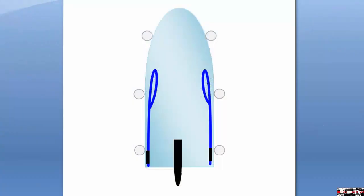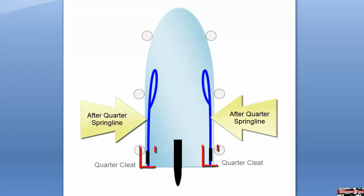Rig fenders port and starboard and make up two long spring lines astern. Attach each spring line to the quarter cleats on the corner of your stern and tie large eyes into each spring line. That way as you enter the slip, you can drape the eye of each spring over the outermost pilings.